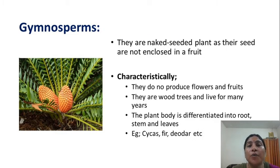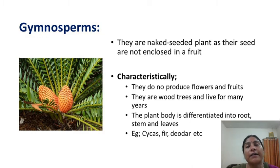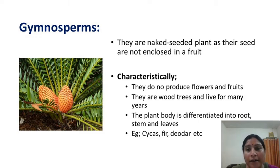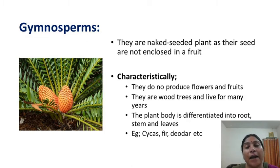Gymnosperms have seeds that are always naked, so they are naked-seeded plants whose seeds are not enclosed within a fruit. This is the distinct character of Gymnosperms. Characteristics include: they do not produce flowers and fruits but do have seeds; they are woody trees and live for many years; and the plant body is well-developed into root, stem, and leaves. Examples: Cycas, Zamia, Fir, Deodar.